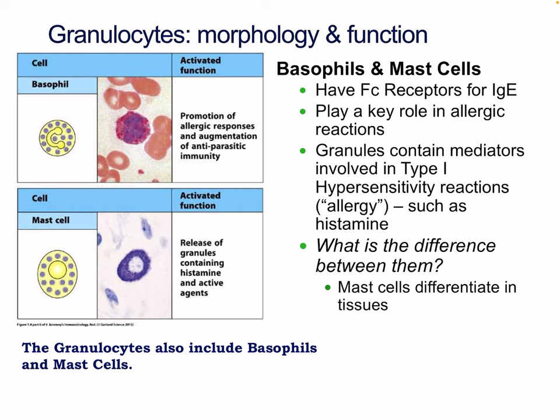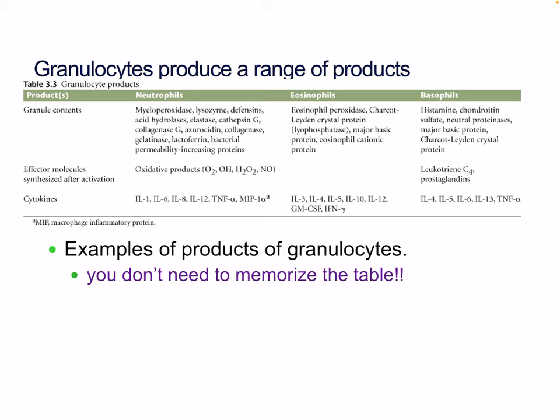The key difference between basophils and mast cells is that basophils are blood-borne and stay in the blood, whereas mast cells migrate into the tissues. Neutrophils are notable for their synthesis of oxidative products — reactive oxygen species like hydrogen peroxide, nitric oxide, and superoxide — which are highly effective at killing cells. Eosinophils focus on parasites, and basophils contain histamine as well as leukotrienes and prostaglandins involved in allergic reactions. It also becomes relevant to know which cytokines are associated with each cell type, as certain key cytokines can distinguish them.